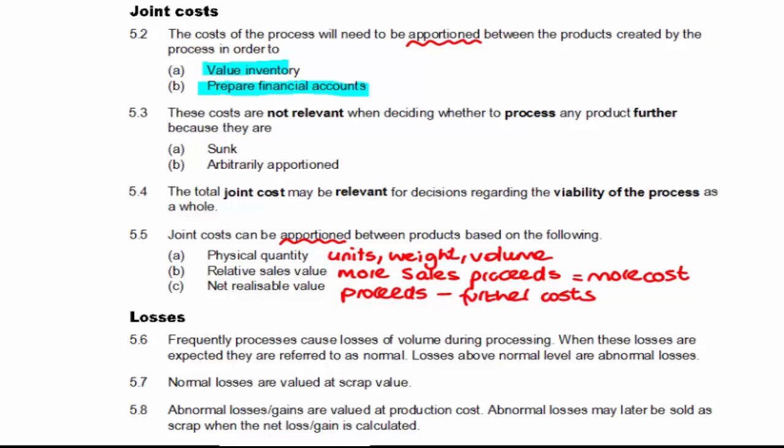Now we're concerned with decision making. And the first decision is the one about: do we sell the products now or do we further process them? Now joint costs in this instance are not relevant. And the reason for that is that they are apportioned arbitrarily, but also that they are sunk. They've already happened. So regardless of whether we sell the products now or whether we further process, it won't make any difference at all. We've already incurred them.